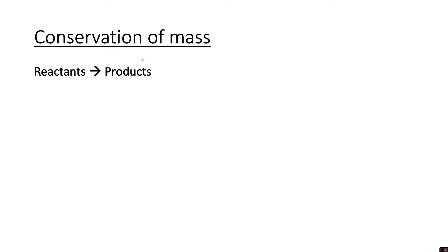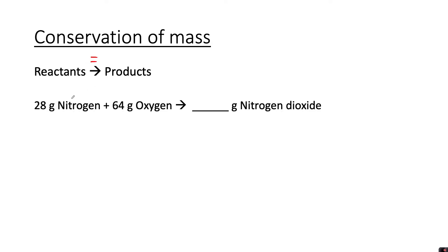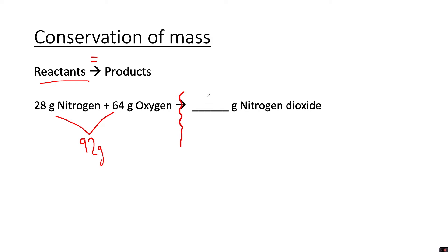We can use the idea of conservation of mass to perform some simple calculations. The mass of the reactants must equal the mass of the products. Here we've got a simple equation: 28 grams of nitrogen reacts with 64 grams of oxygen to make a certain amount of nitrogen dioxide. Everything on the left hand side are the reactants and must equal the right hand side. I recommend you draw a wiggly line where the arrow is to separate left and right. This side adds up to 92 grams, so conservation of mass tells us we must have 92 grams of nitrogen dioxide.